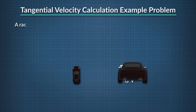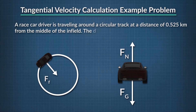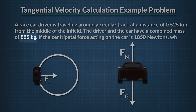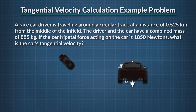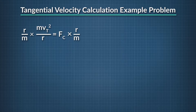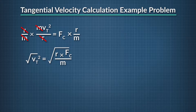Here's a sample problem involving centripetal force. A race car driver is traveling around a circular track at a distance of 0.525 kilometers from the middle of the infield. The driver and car have a combined mass of 885 kilograms. If the centripetal force acting on the car is 1,850 newtons, what is the car's tangential velocity? Since we are solving for speed, we'll need to isolate that variable. We multiply both sides of the equation by the radius over the mass, giving us: radius times centripetal force divided by mass equals tangential velocity squared. Taking the square root of both sides gives tangential velocity equal to the square root of the radius times centripetal force divided by the mass.